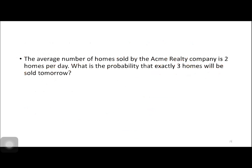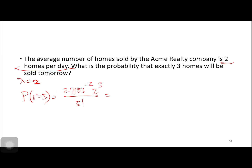Another example: the average number of homes sold by Acme Realty Company is two homes per day. What is the probability that exactly three homes will be sold tomorrow? Our lambda is 2. P(r=3) = 2.7183 raised to negative 2 times 2 raised to 3 over 3 factorial = 0.1804.